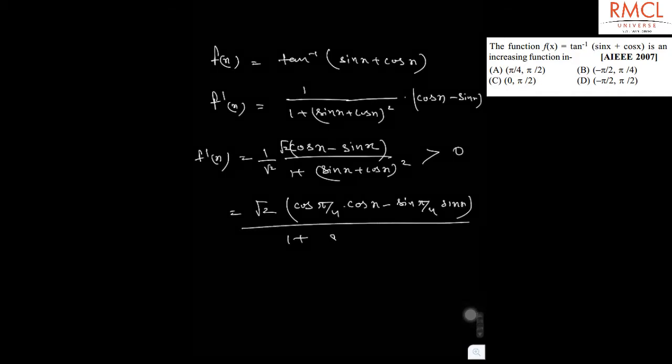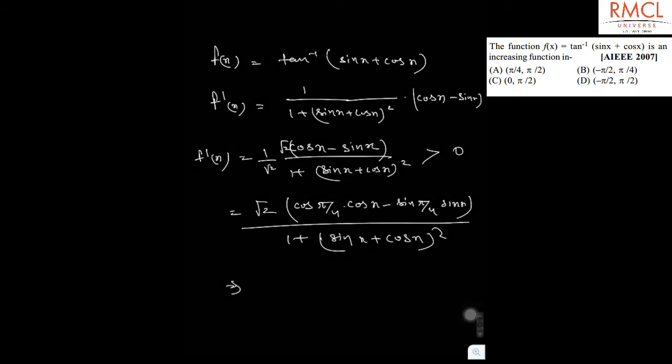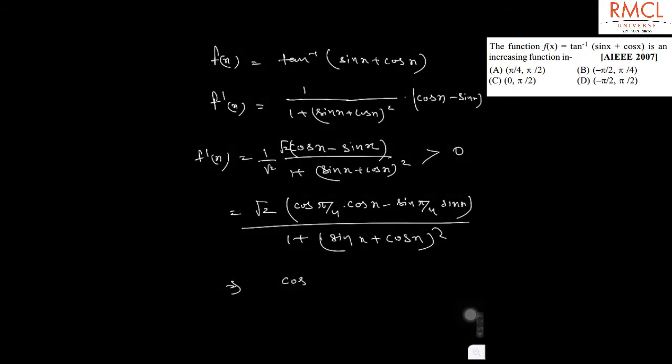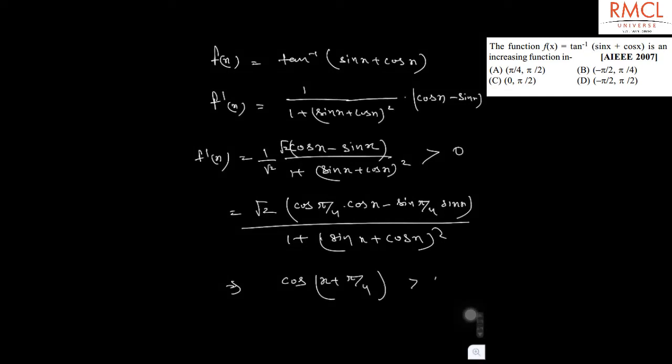Divided by 1 plus sin x plus cos x. As we can see, the denominator is always greater than 0. So this is cos(x + π/4), which should be greater than 0.